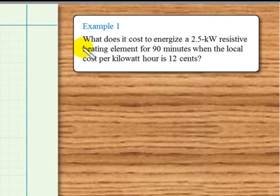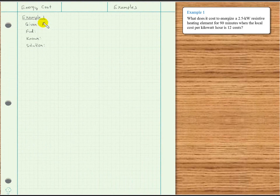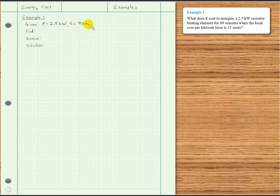What does it cost to energize a 2.5 kilowatt resistive heating element for 90 minutes when the local cost per kilowatt hour is 12 cents? Given information: power is 2.5 kilowatts, time is 90 minutes, and the cost per kilowatt hour is 12 cents, which we'll write as 0.12 dollars.